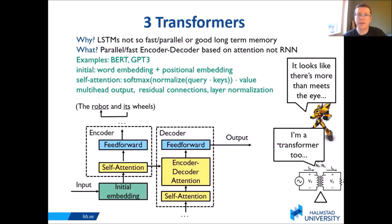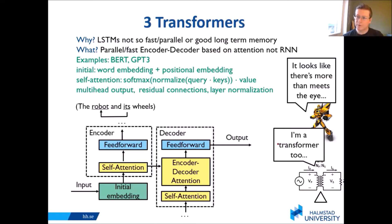Recently, transformers have also come into play in various fields. The reason was that LSTMs were not so fast and not able to parallelize so well, and looking back really far over time is not so easy. The idea was basically that we don't even need to use the RNN structure — we can just use attention for a really good effect, and then massively parallelize our problem.